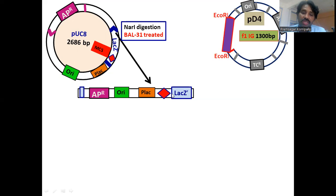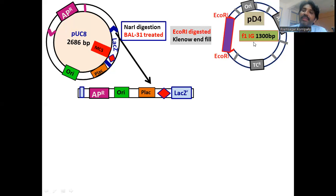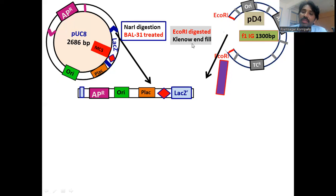By the action of BAL31, the NAR1-digested PUC8 becomes a linearized blunt-end DNA molecule. PD4 is then digested with EcoRI, which releases the F1 intragenic region. The EcoRI-digested intragenic region is then subjected to the Klenow fragment.